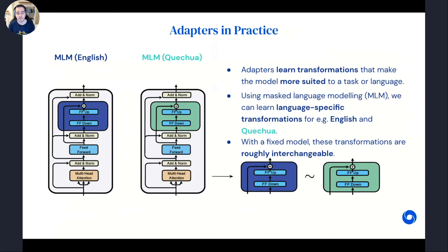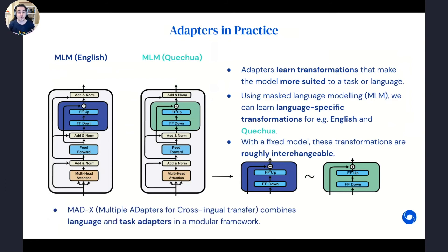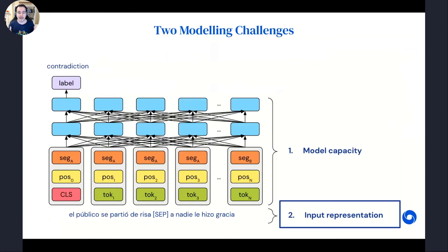Because we keep the underlying model fixed, these adapter parameters are essentially interchangeable — we can have a model with an English adapter suited for English and make the same model more suited to Kashubian by simply replacing the English adapter with its Kashubian counterpart. We have proposed work that builds on this idea of using adapters for zero-shot cross-lingual transfer, combining them with task adapters that capture something about the underlying task, enabling a parameter-efficient way to adapt to different languages and tasks simultaneously.